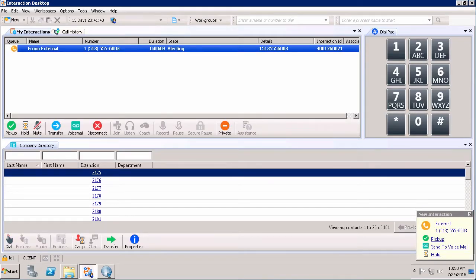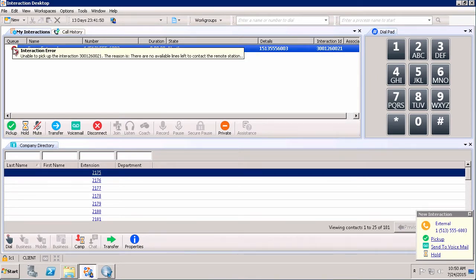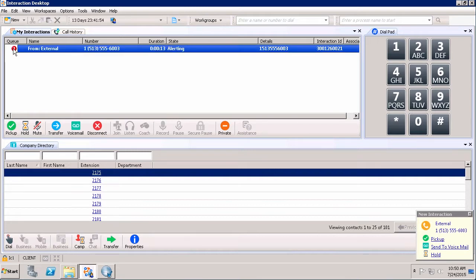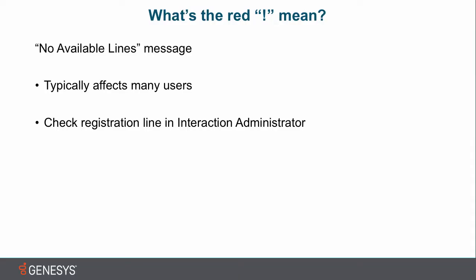Another way the problem can manifest is when the call comes in and you click pickup, the exclamation point goes red right away, and when we hover over it, it says the reason is there are no available lines left to contact the remote station.